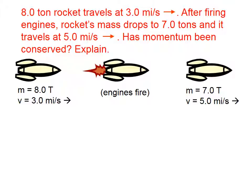Let's try this one. An 8-ton rocket travels at 3 miles per second to the right. After firing its engines, the rocket's mass drops to 7 tons, and it travels now at 5 miles per second. Has momentum been conserved? Explain.